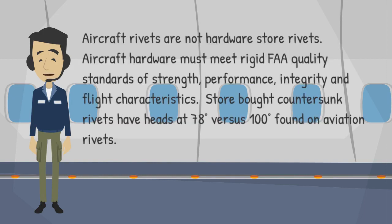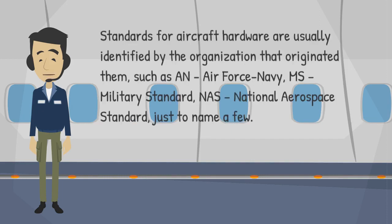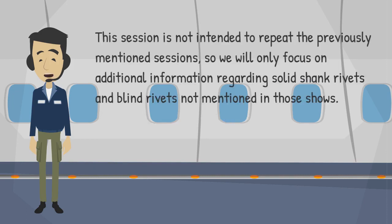Aircraft rivets are not hardware store rivets. Aircraft hardware must meet rigid FAA quality standards of strength, performance, integrity, and flight characteristics. Store-bought countersunk rivets have heads at 78 degrees versus 100 degrees found on aviation rivets. Standards for aircraft hardware are usually identified by the organization that originated them, such as AN (Air Force Navy), MS (Military Standard), and NAS (National Aerospace Standard), just to name a few. This session will only focus on additional information regarding solid shank rivets and blind rivets not mentioned in previous sessions.